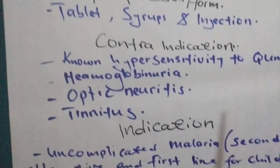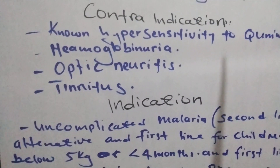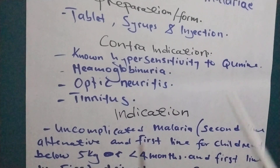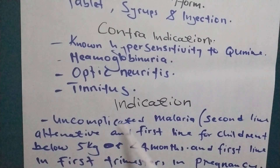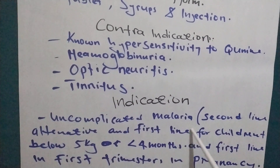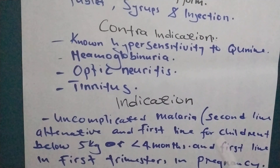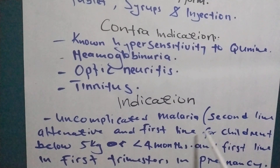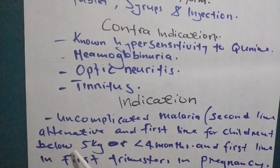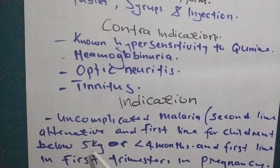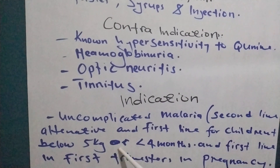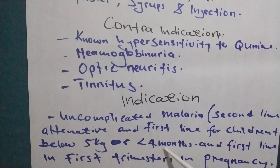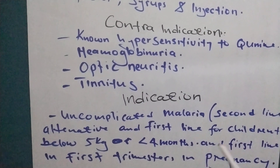What are the indications of quinine — where we are supposed to use quinine? We use quinine in uncomplicated malaria as a second-line alternative, and as first-line treatment for children below 5 kg or below 4 months.